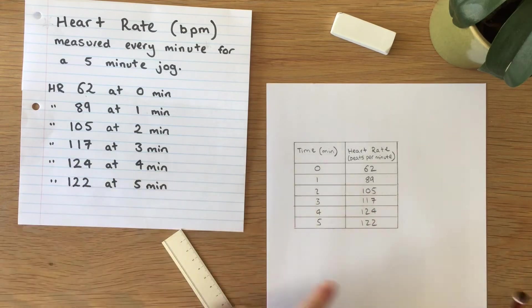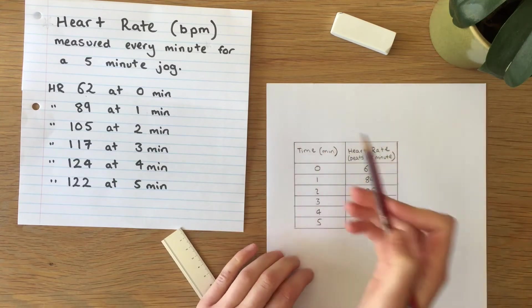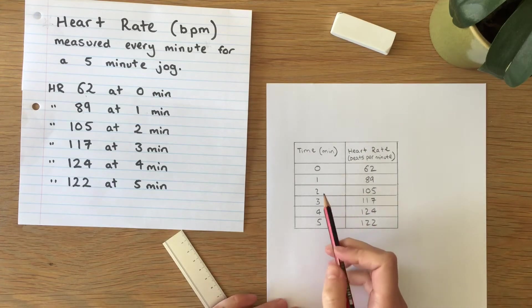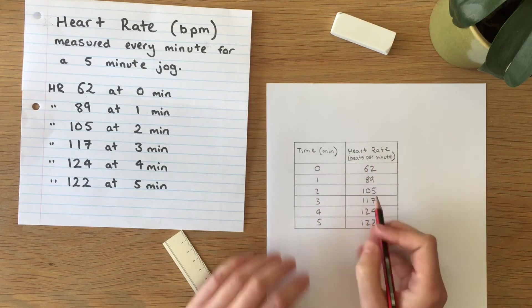Now there's still one key thing missing and that is a title. So we're going to make sure we include both variables in the title, so time and heart rate.